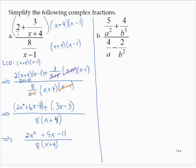That numerator will factor. 2x² + 9x − 11 does factor. We'd have an x and a 2x, with 11 and 1, giving (x − 1)(2x + 11). However, neither of those factors cancels with any factor in the denominator, so it's not necessary to leave it in its factored form.